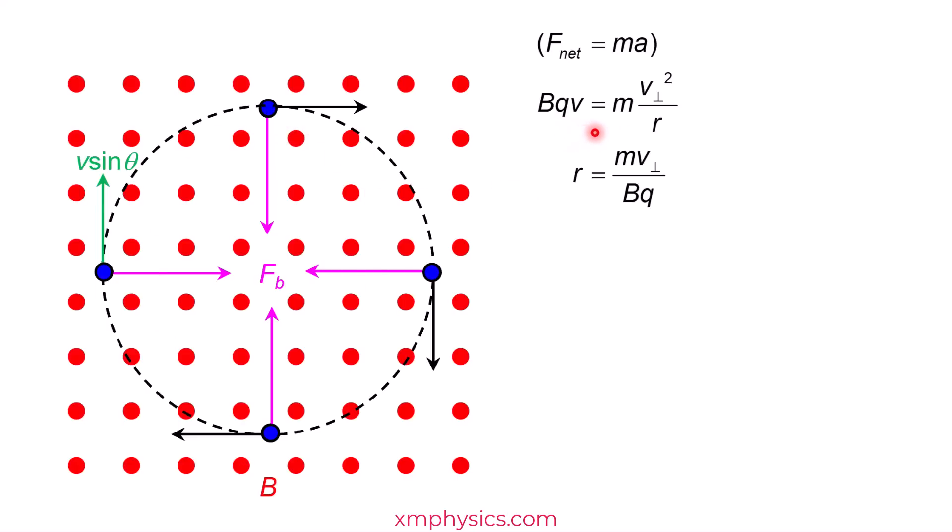As usual, you write BQV equals MV squared over R. Notice the V should be the perpendicular component, the V sine theta. So we have the expression for the radius of the circular motion.